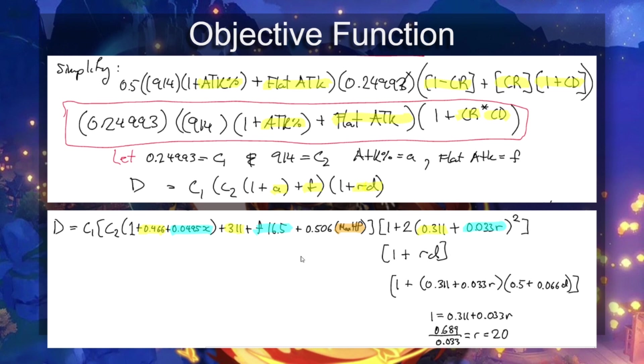If we look down here, we can expand this formula even more. In the blue, we're looking at the substat values being added. The 0.0495 is actually the average substat roll for attack percent, and X is the number of favorable rolls that we get into it. Similarly, F is the number of favorable rolls going into flat attack, and R is the number of favorable rolls going into crit rate.